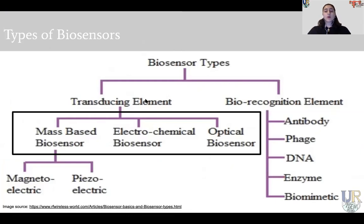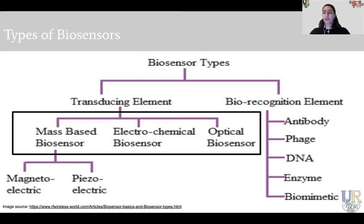What are the types of biosensors? The first type is electrochemical biosensors. Electrochemical biosensors use electrochemical transducers to detect specific ligands, tissues, and sometimes non-biological matrices. This makes them very practical, sensitive, and capable of producing very fast results.